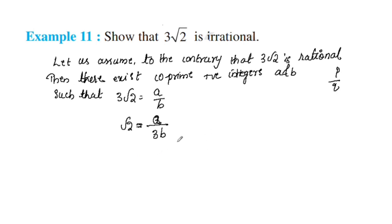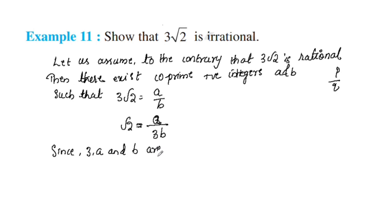What assumption is wrong? We know that √2 is irrational. We assumed that 3√2 is rational. We know that √2 is irrational — this contradicts the fact. Since 3a and b are integers, A divided by 3B is irrational.